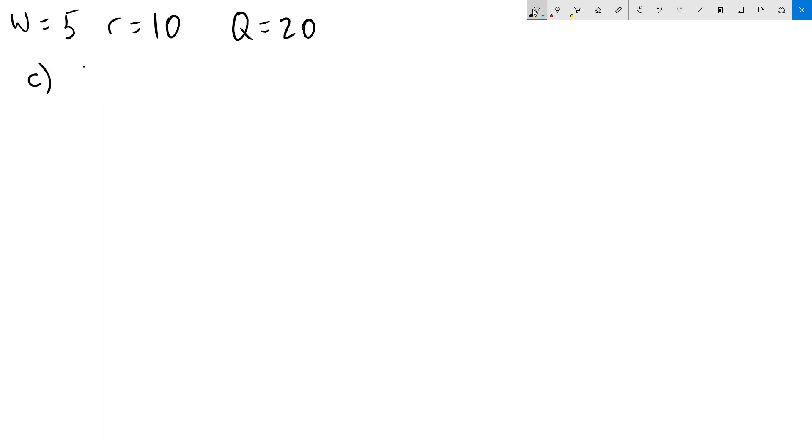For our final part, we have the production function k to the 2 thirds, L to the 1 third. This is a Cobb-Douglas production function. Of the three production functions we're working with, this one is definitely the most involved to solve. But it follows a set procedure.